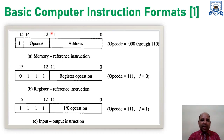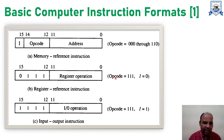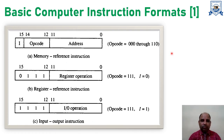This diagram is showing the basic computer instruction format. As the diagram clearly shows, there are three different computer instruction formats: the first is memory reference instruction, the second is register reference instruction, and the third is input-output instruction.